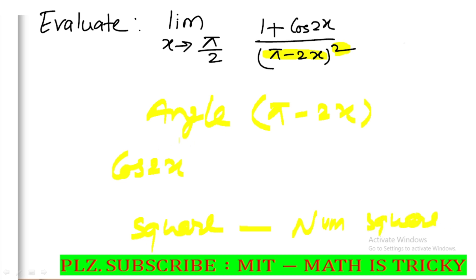Angle 2x is substituted. So 1 plus cos 2x is not in direct form. We apply the identity: 1 plus cos 2x equals 2cos²x.